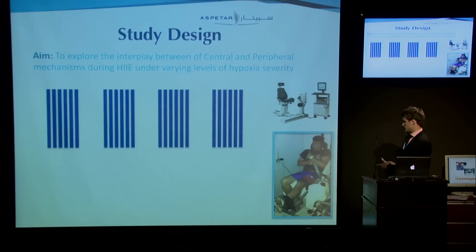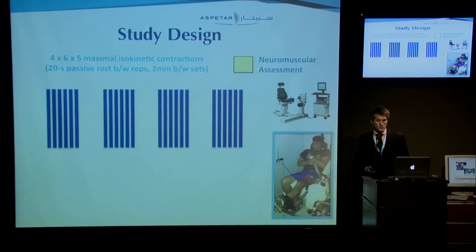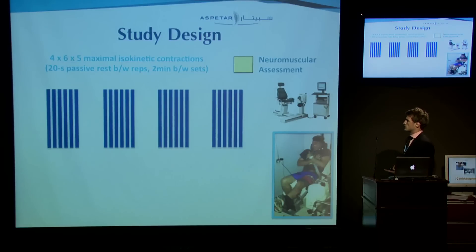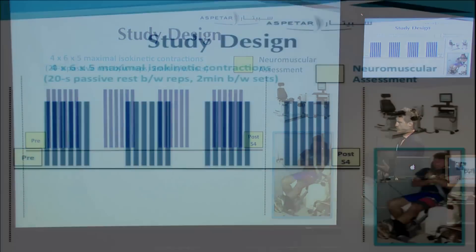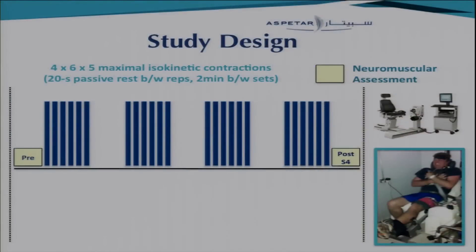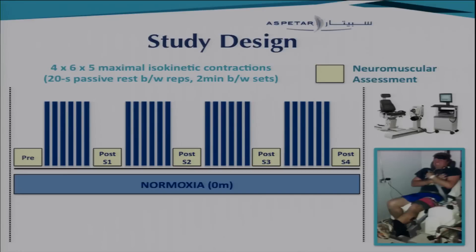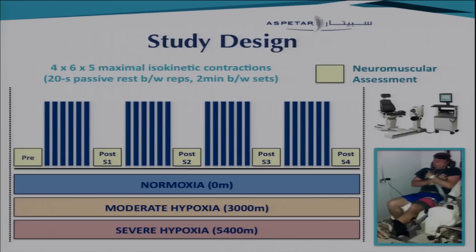The first study was conducted on a Biodex isokinetic dynamometer. Subjects completed four sets of six by five maximal isokinetic contractions. Using the Biodex allowed neuromuscular assessments to be conducted not only pre and post exercise, but also immediately between bouts — unlike whole body exercise where there is a time delay moving from a bike or treadmill to a chair. With central and peripheral fatigue shown to recover very rapidly, this allowed us to assess the immediate development and time course kinetics of central and peripheral fatigue. We used normoxia, moderate, and severe hypoxia to explore how this interaction changes across different levels of hypoxia severity.